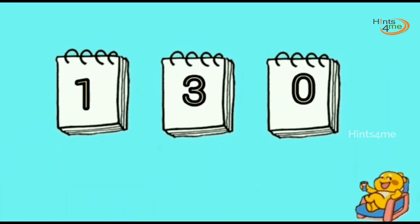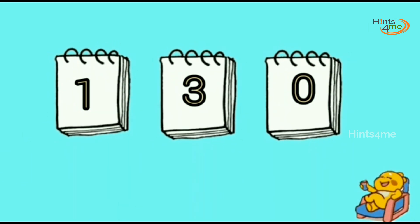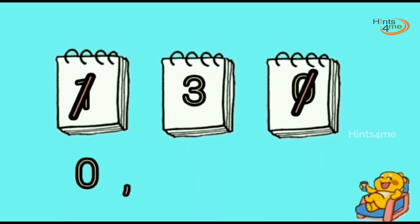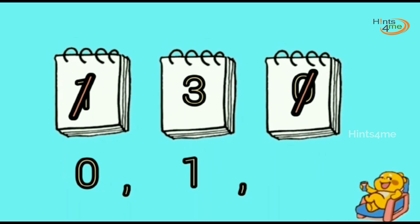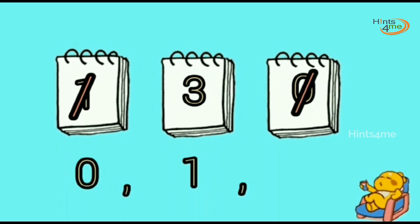Arrange these numbers in ascending order. Now it's your turn to say the answer. Zero is there — yes, cut it and write it. One is there — cut it and write it. Two is there — no. Three is there — yes, then cut it and write it.